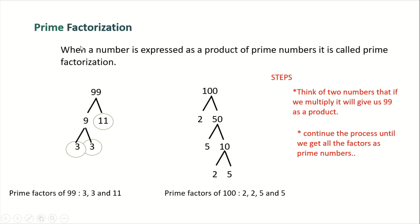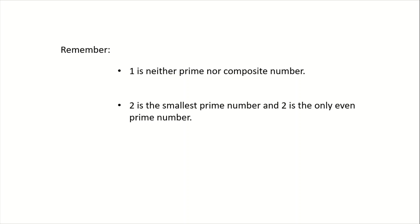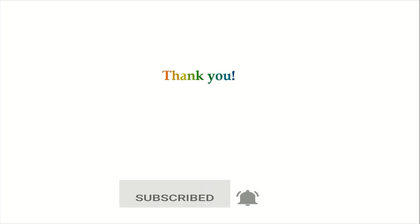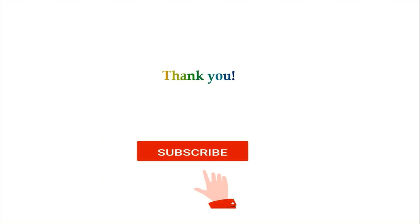So again, in prime factorization we break up the number into factors and continue the process until all factors are prime numbers. Take note that 1 is neither prime nor composite, and 2 is the smallest prime number and the only even prime number. That's all for today class — please don't forget to give a thumbs up, share, subscribe, and hit the notification bell. Thank you!